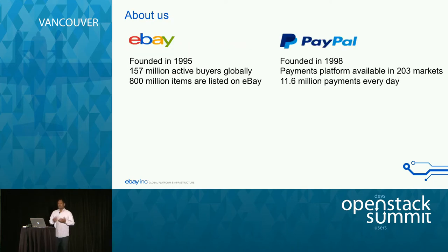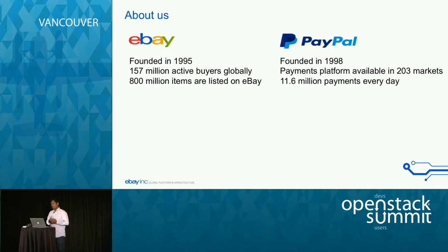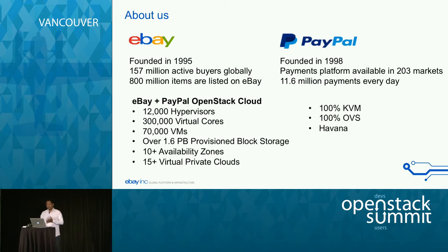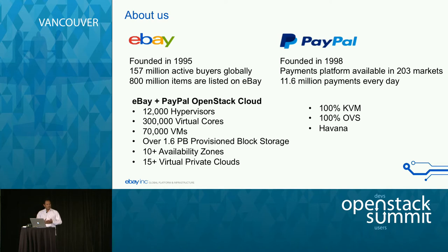Before I begin, I want to talk about eBay and PayPal and the demanding business. eBay has about 157 million active users globally. PayPal is present in 203 markets worldwide. Both have a lot of transactions happening, which requires a highly scalable dynamic cloud. The eBay PayPal OpenStack Cloud has over 12,000 hypervisors—and that keeps growing daily—300,000 virtual cores, 70,000 VMs, and over 1.6 petabytes of provisioned storage.